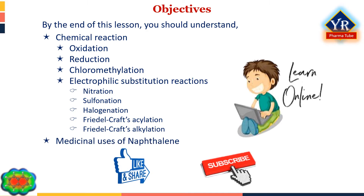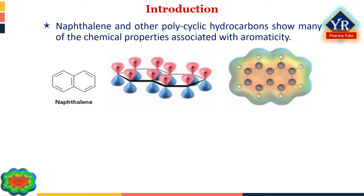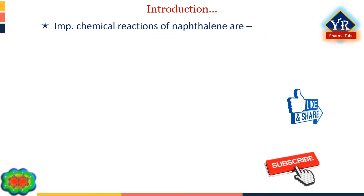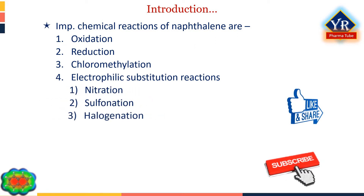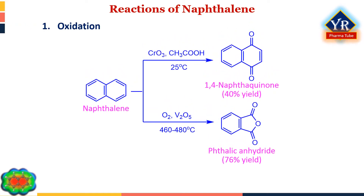We will also learn the medicinal uses of naphthalene and its derivatives. Naphthalene and other polycyclic aromatic hydrocarbons show many of the chemical properties associated with aromaticity. Naphthalene has a cyclic conjugated pi electron system with p-orbital overlap both around the 10-carbon periphery of the molecule and across the central bond. Since 10 pi electrons is a Hückel number, there is pi electron delocalization and consequently aromaticity in naphthalene.